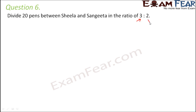So when we say ratio, does that mean Sheila should get 3 pens and Sangeeta should get 2 pens? No, that doesn't mean that. That means that had there been a total of 5 pens, Sheila should have got 3 and Sangeeta should have got 2. But in this case we have 20 pens, so exactly how many pens they will get is what we need to calculate.